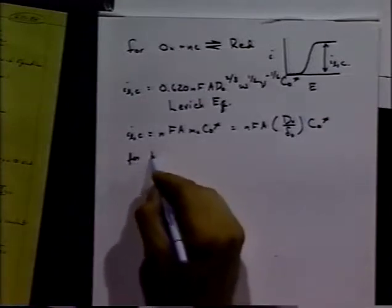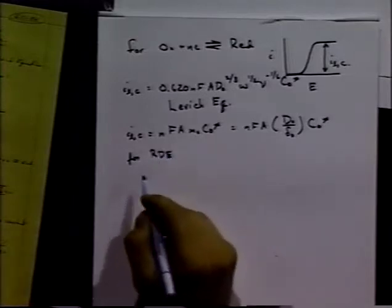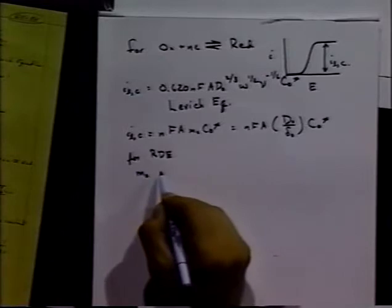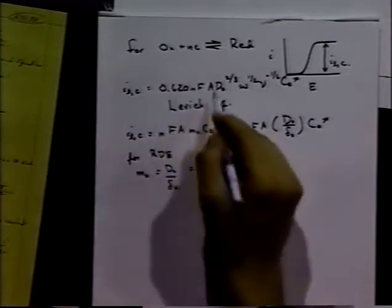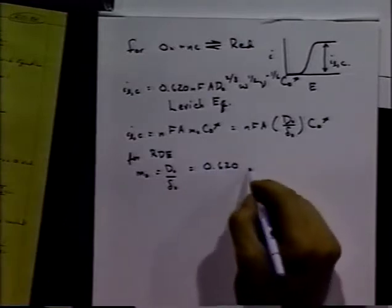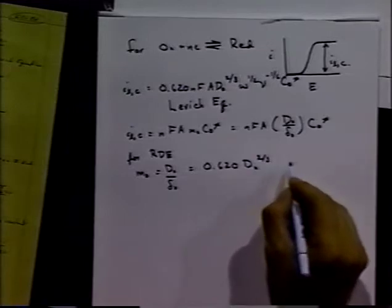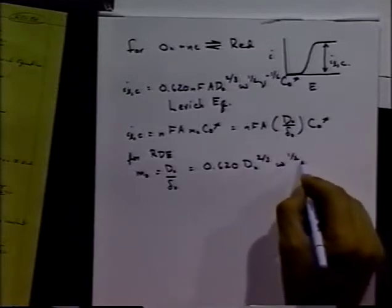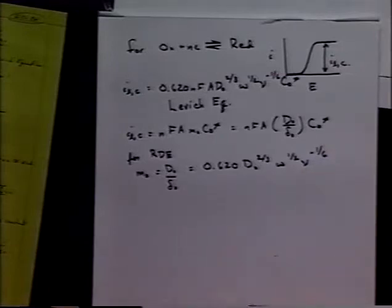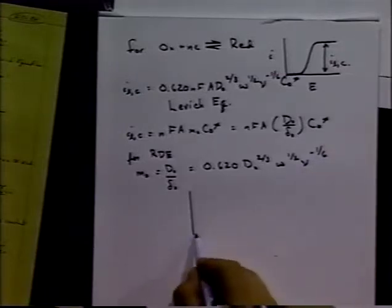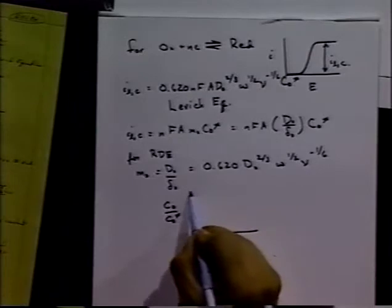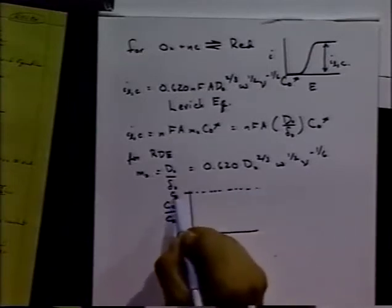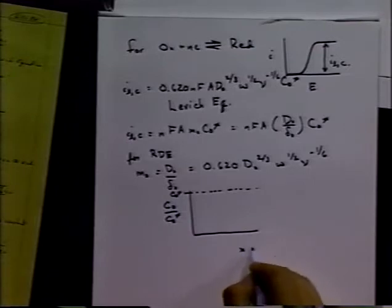In the Nernst diffusion layer approximation, the mass transfer coefficient was D0 over delta 0. Now for RDE, that's the approximation Levitch made when he solved this problem. He said the mass transfer coefficient was indeed D0 over delta 0. In terms of this equation, it turns out that this relationship is also equal to 0.620 times the diffusion coefficient to the two-thirds power, rotation rate to the one-half power, and kinematic viscosity to the minus one-sixth power.